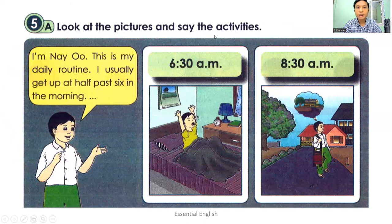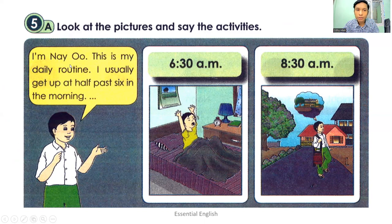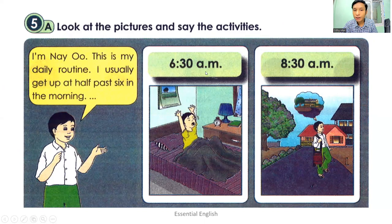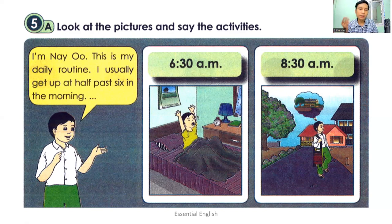Look at the pictures and see the activities. The character's name is Neu. He said: 'I'm Neu. This is my daily routine. I usually get up at half past six in the morning.' So half past six A.M. is 6:30 A.M. When you look at the picture you can find that he gets up at 6:30 A.M.